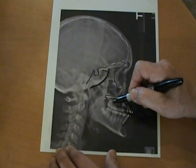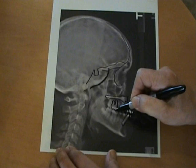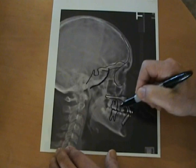Bicuspids. The six-year molar. The maxillary six-year molar. The lower six-year molar. The bicuspids.